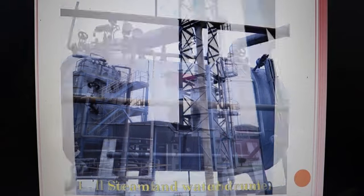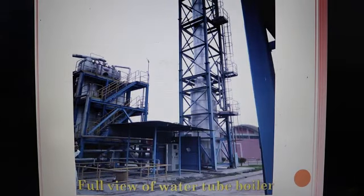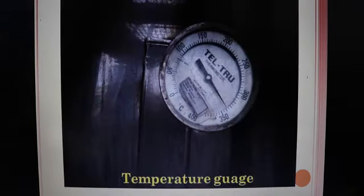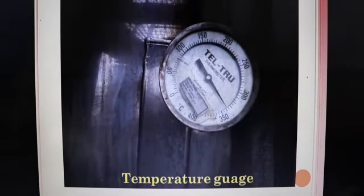This is the steam and water drum. This is the full view of water tube boiler. This is the feed temperature gauge.